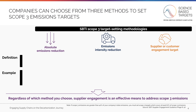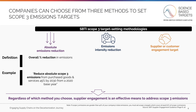There are three methods by which you can set targets to reduce Scope 3 emissions. You may also choose a combination of methods. Absolute emissions reductions target an overall percentage reduction in a company's emissions. For example, a company could target to reduce absolute Scope 3 emissions from purchased goods and services by 45% by 2030 from a 2020 base year.